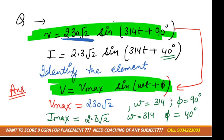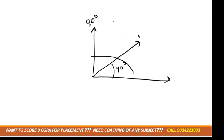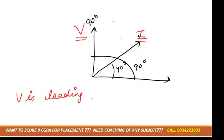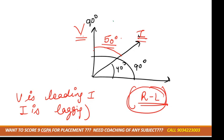We can also draw the phasor diagram. Phi is 90 degrees for voltage and 40 degrees for current, so voltage is at 90 degrees and current is at 40 degrees. Voltage is leading, which means current is lagging. Current lags in an inductor, so this is a combination of R and L. The angle difference between voltage and current is 90 minus 40 equals 50 degrees.